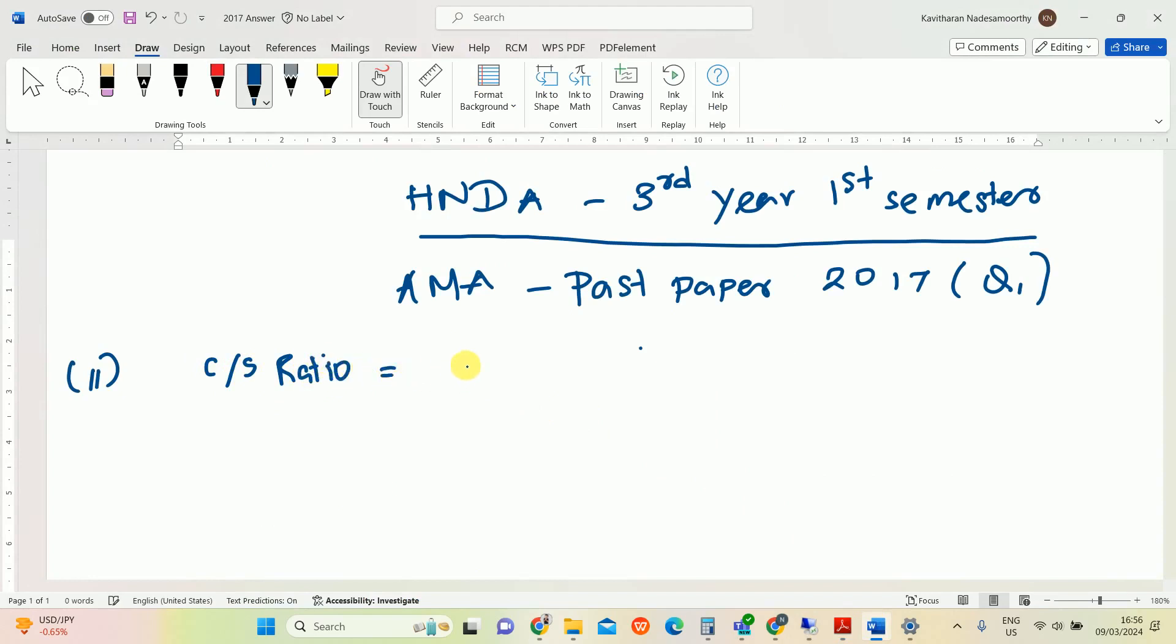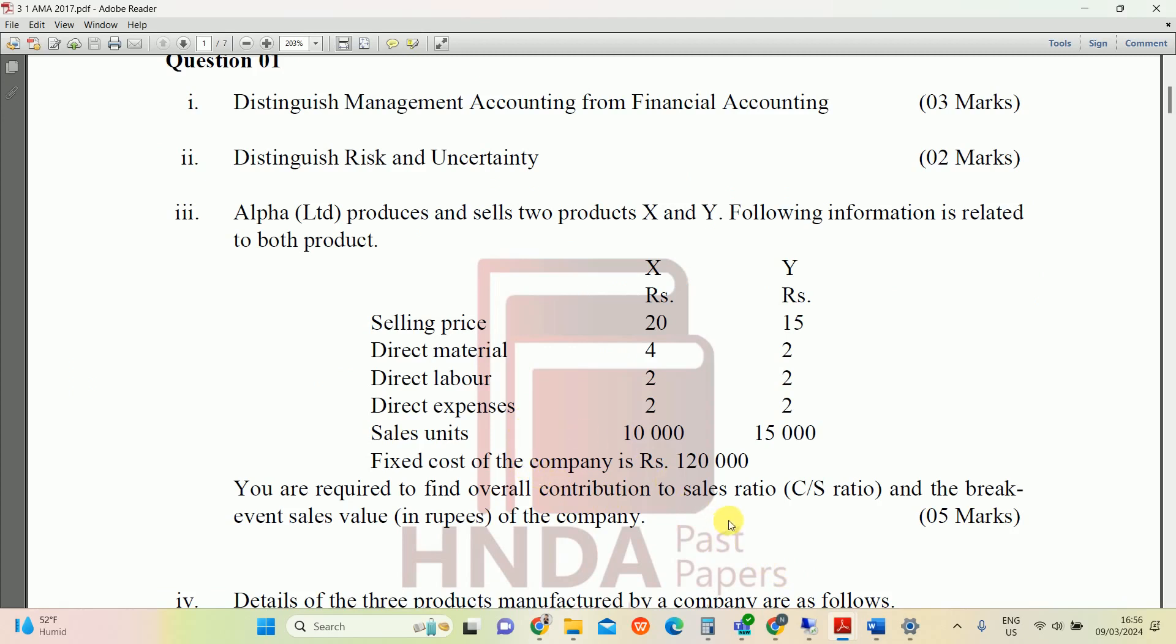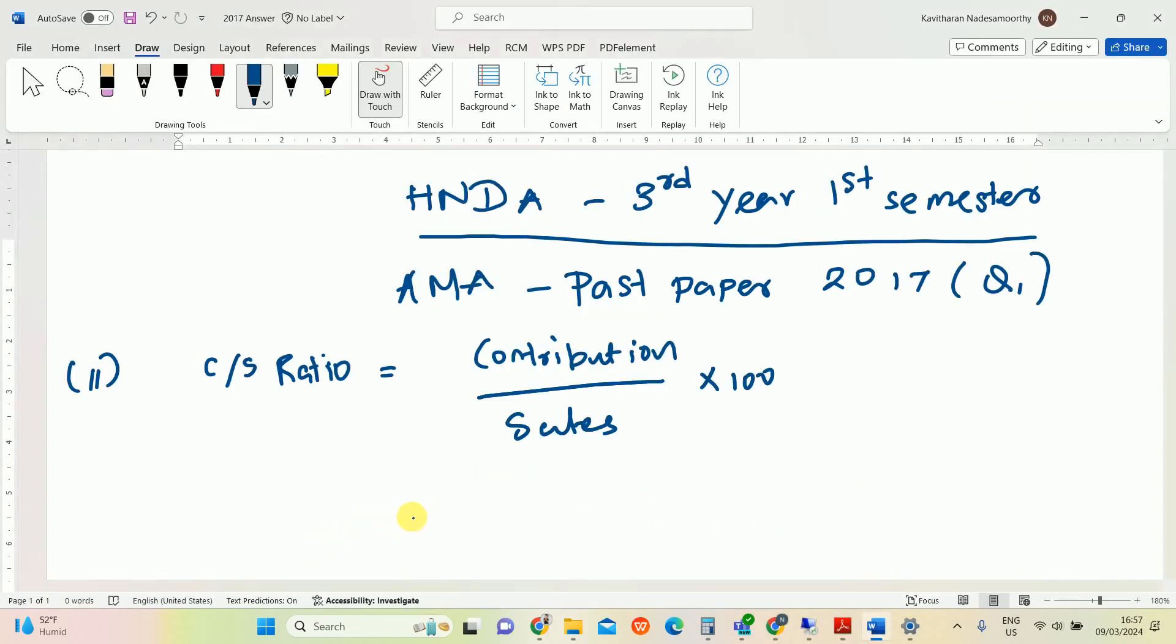What is the equation of C/S ratio? We can get the equation from the question. C/S ratio: C for contribution and S for sales, so contribution divided by sales. As per the question paper, we need to calculate overall contribution to sales, so overall combined C/S ratio. It means combined C/S ratio, so we need to calculate this.